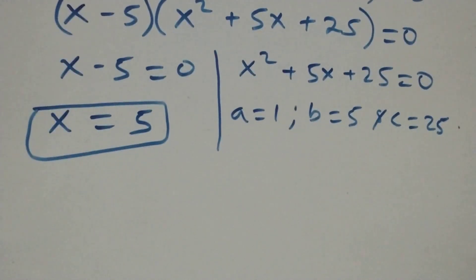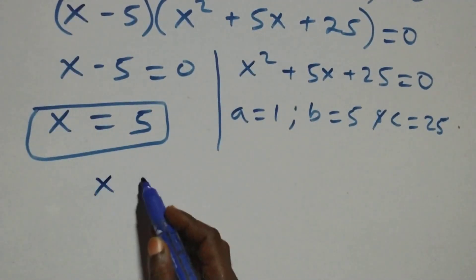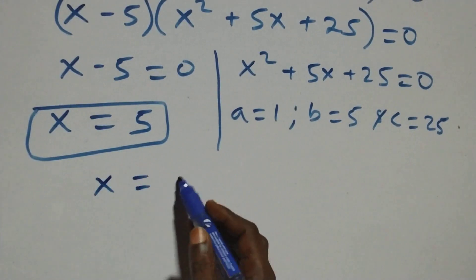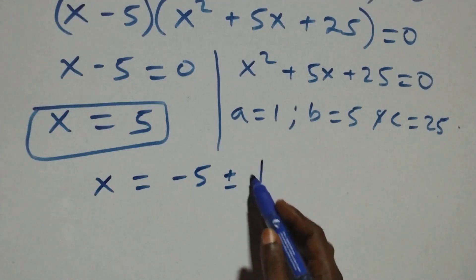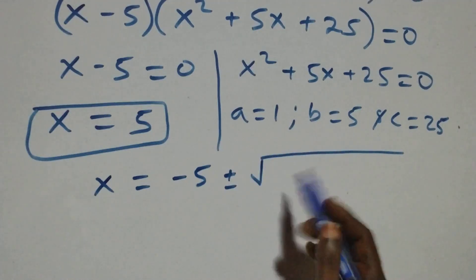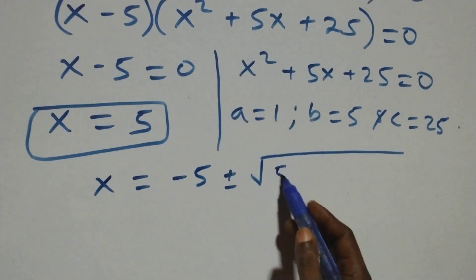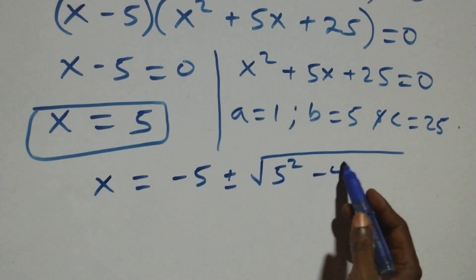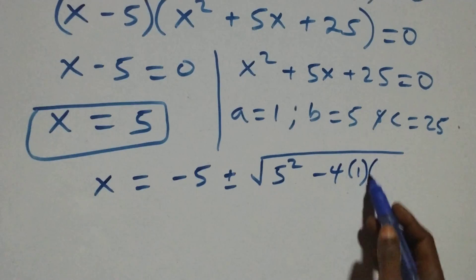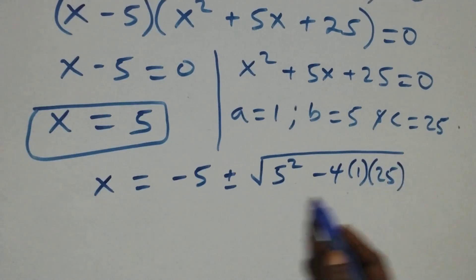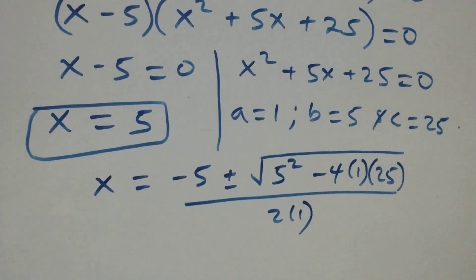Applying the quadratic formula, this becomes x equals to minus 5 plus or minus square root of 5 squared minus 4 times 1 times 25, over 2 times 1.